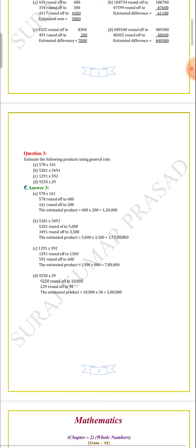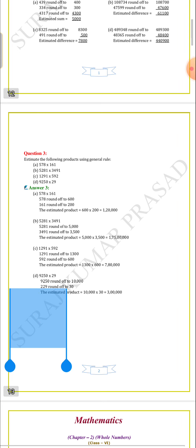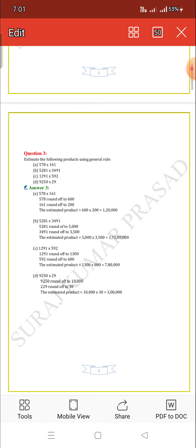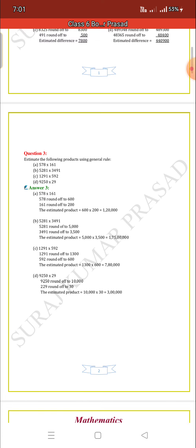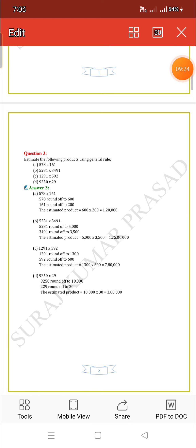The last question D: 9,250 into 29. 9,250 rounds off to 10,000, and 29 rounds off to 30. The estimated product equals 10,000 × 30 = 3,00,000 — that is 3 lakhs.